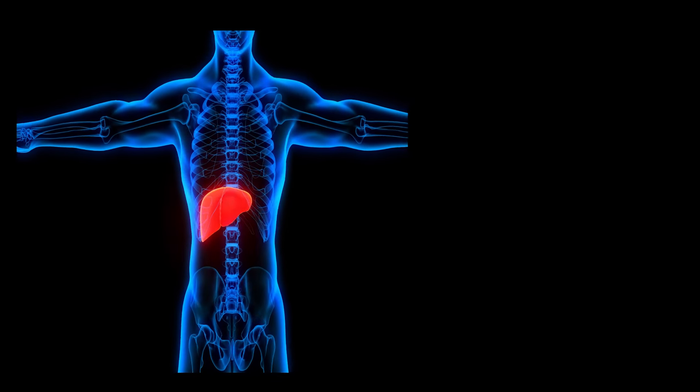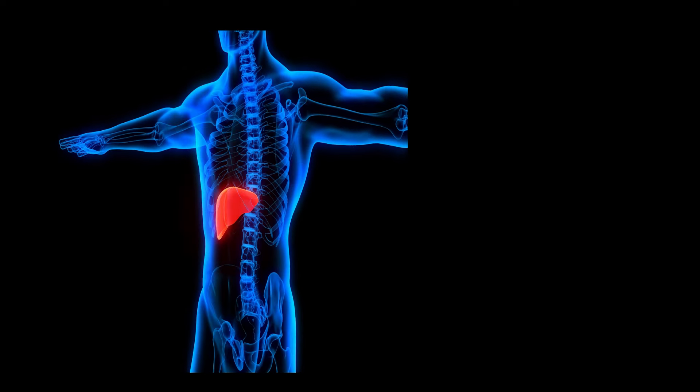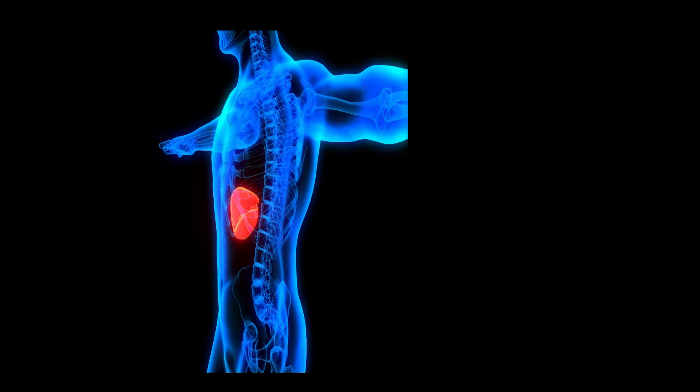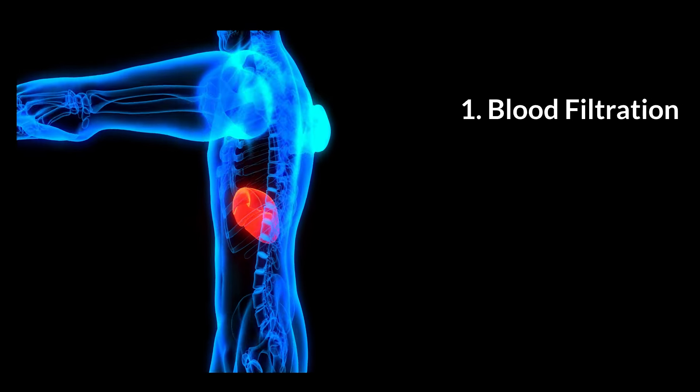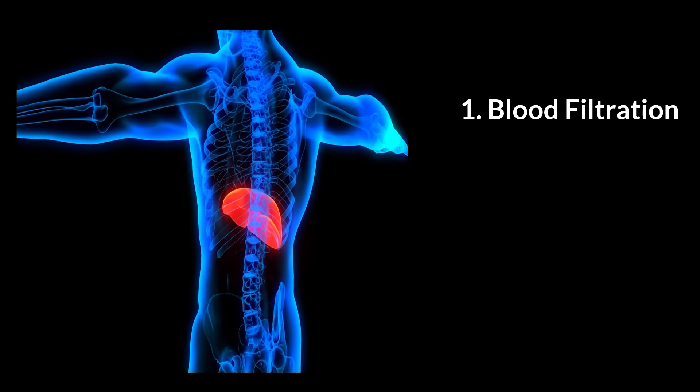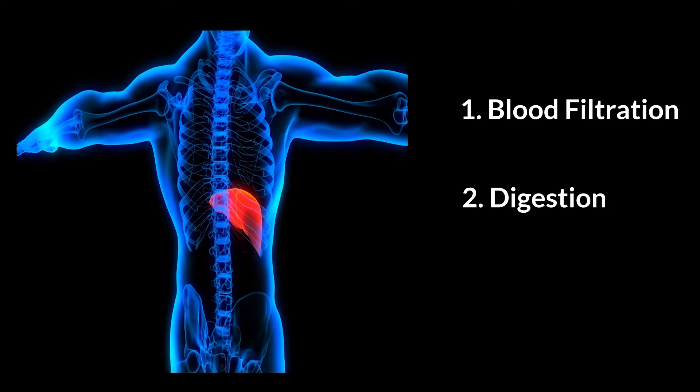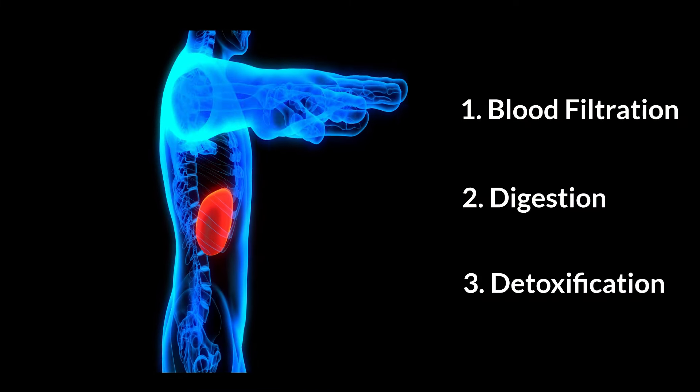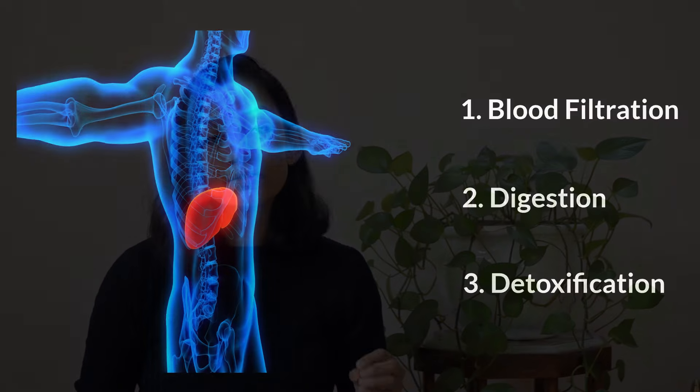The liver is the largest organ in our body and it plays many important roles. One very important role is blood filtration — it filters the blood and breaks down all the harmful substances in it. The liver also helps in digestion by secreting bile into our intestine. Most importantly, the liver performs detoxification, safely breaking down and removing harmful substances, chemicals, and alcohol from the blood.